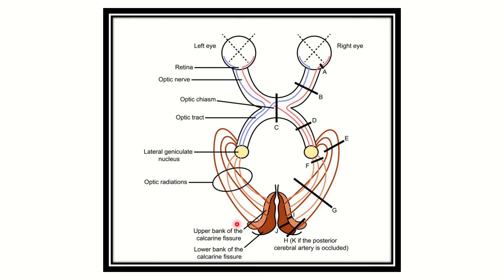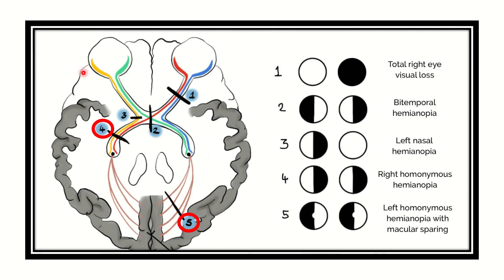Looking at the second picture, we can see the complete pathway again: retina, optic nerve, optic chiasm, optic tract, lateral geniculate body, optic radiation, and finally the visual cortex. In this diagram we can also see examples of homonymous hemianopia marked at positions along the pathway.